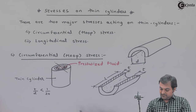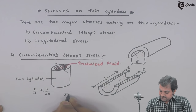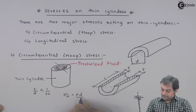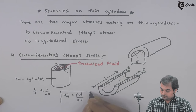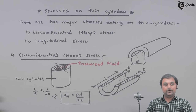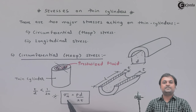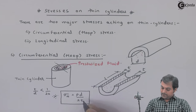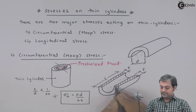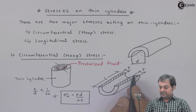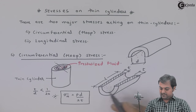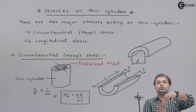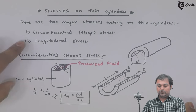Hoop stress is denoted by sigma_h and is given by the formula: σ_h = PD / 2t. Here, small p is the internal pressure of the fluid, D is the internal diameter of the thin cylinder, and small t is the thickness of the thin cylinder. If we know all these parameters, we can get the value of hoop stress. Hoop stress is also called circumferential stress, which breaks the cylinder into two parts.